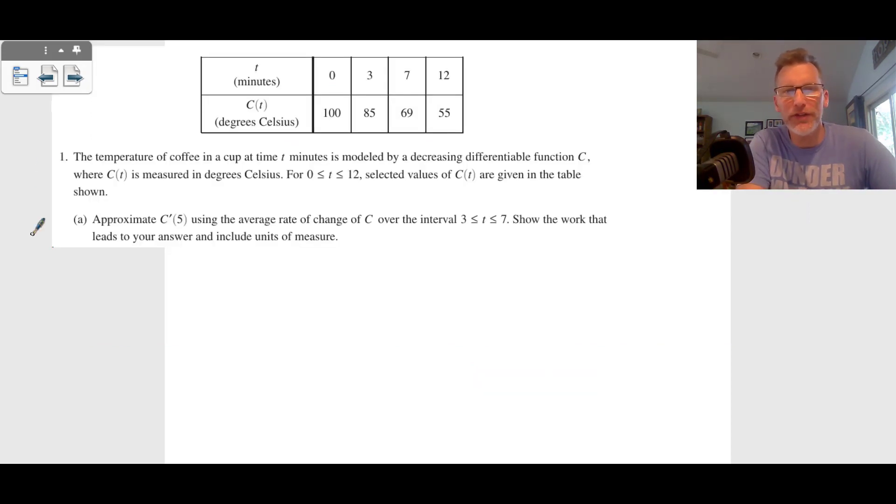You can see it's got a little table of degrees Celsius and minutes, and the first thing they ask us for is approximate C prime of five. So when we're trying to find C prime of five, we're going to use three to seven right here, and we're going to just take the slope.